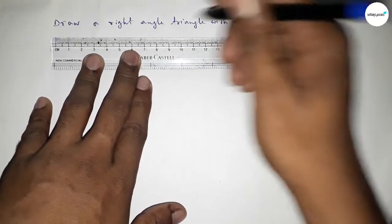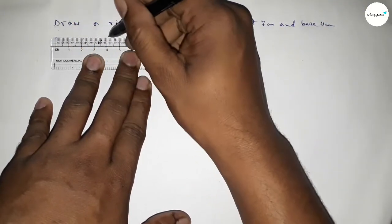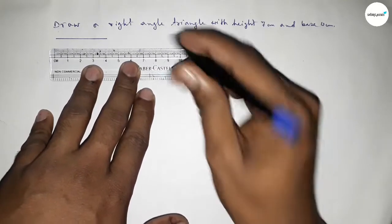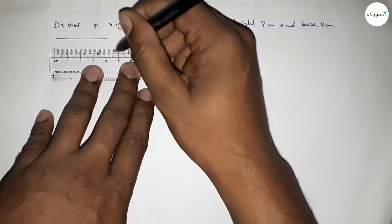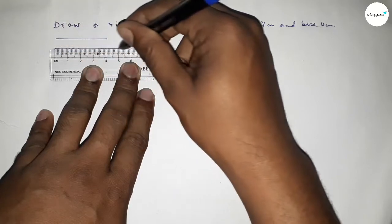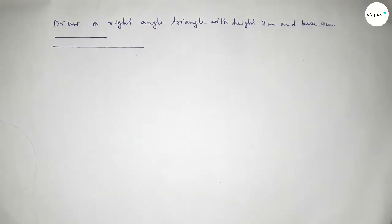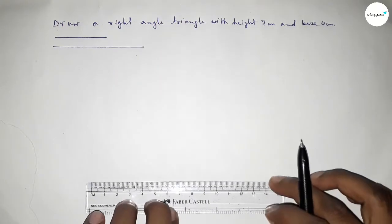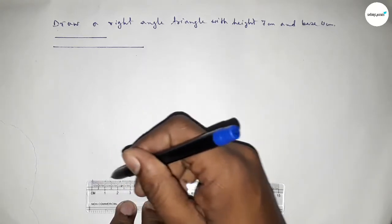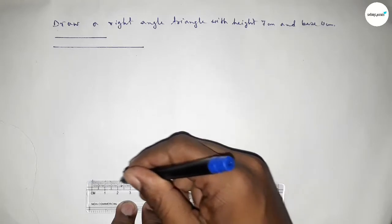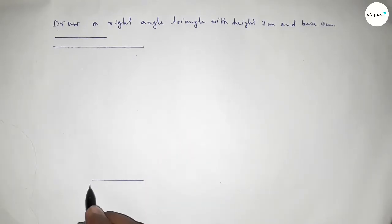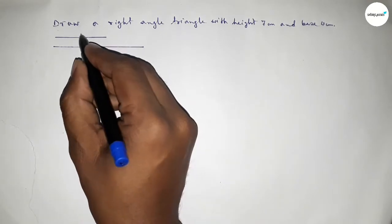First of all, we draw a line of length 4 centimeters and another line of length 7 centimeters. This side is 4 centimeters and this side is 7 centimeters. Now we take point B and point C, marking the 4 centimeter base.